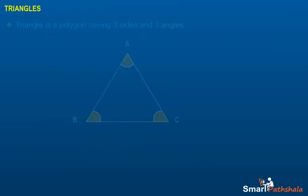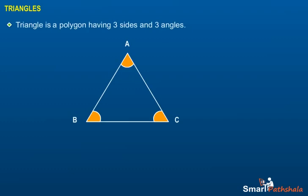Triangles. A triangle is a polygon having three sides and three angles. The sum of the angles of a triangle is 180 degrees.